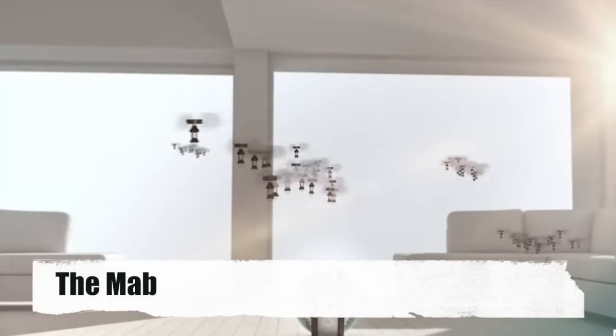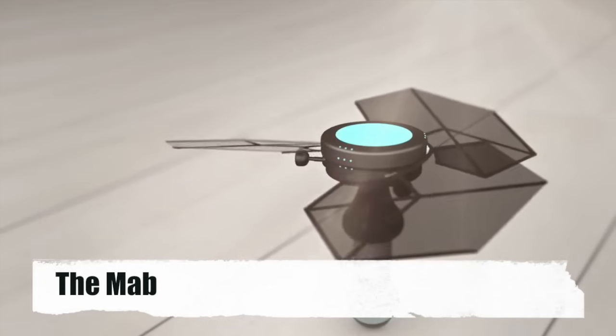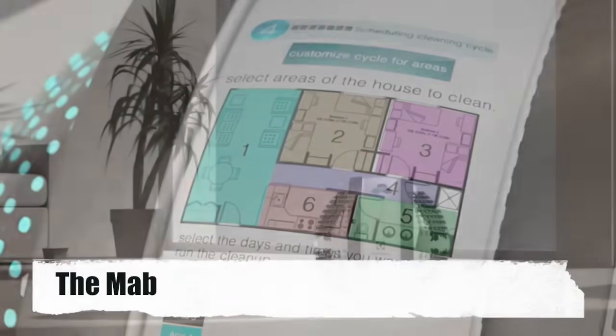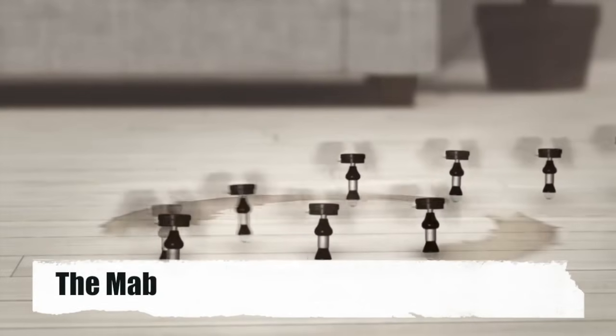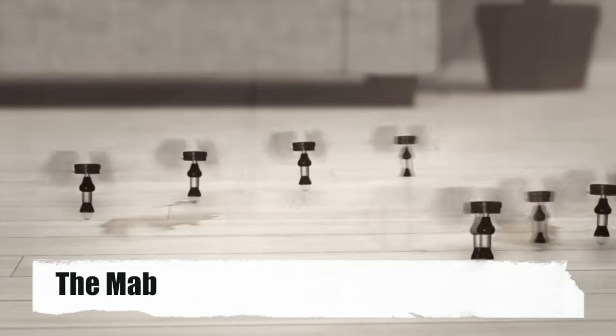The Mab. It flies around your house, senses where it's dirty, and then deploys a bunch of tiny little cleaning bots to make the area sparkle. It's just a concept, but was enough of one to win the Electrolux Design Lab competition.